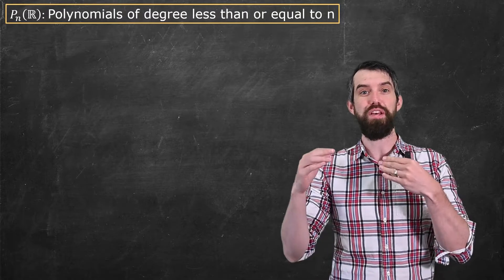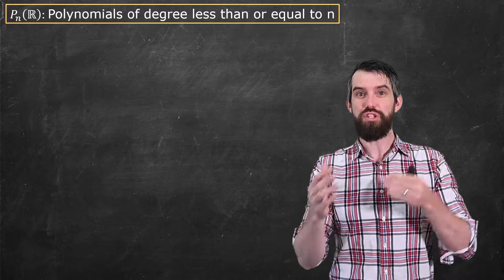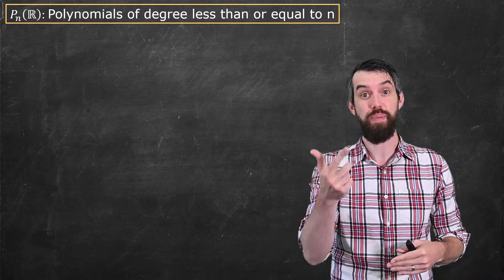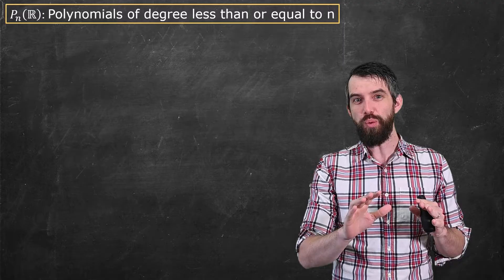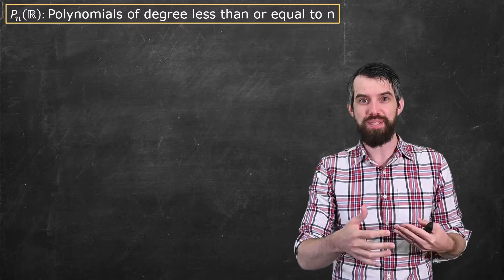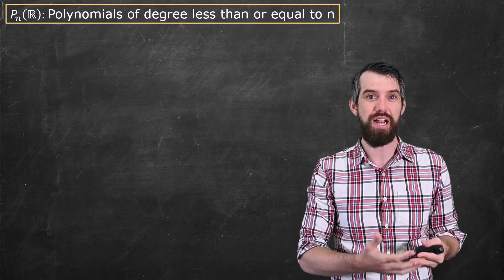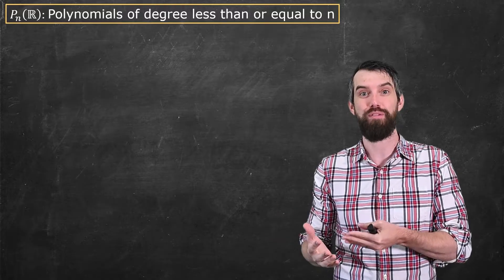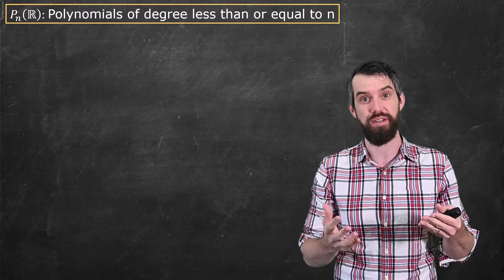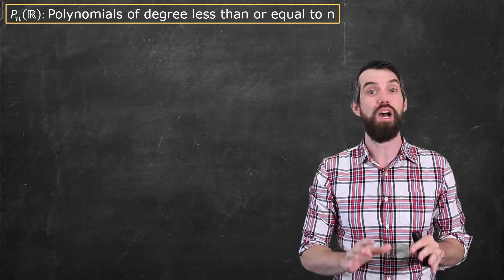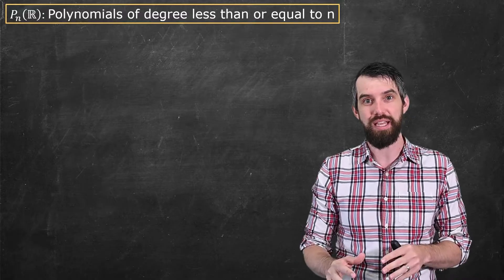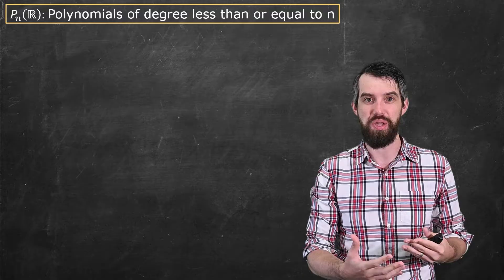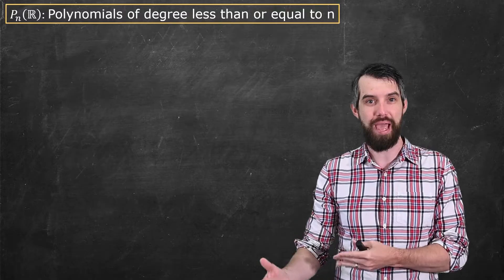In this video, we're going to talk about some of the foundational concepts in linear algebra like linear independence, span, and bases. But we're not going to talk about those concepts in the context of normal vectors in Rn. Instead, we're going to talk about linear independence, span, and bases for the vector space that is polynomials of degree less than or equal to n.